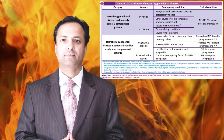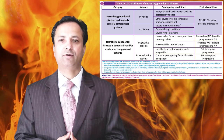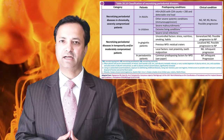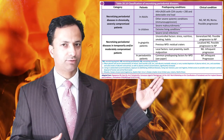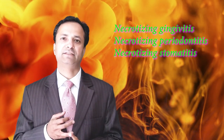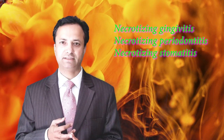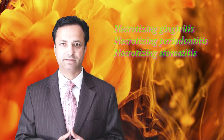According to the 2017 classification system, there are three forms of necrotizing periodontal diseases: first, necrotizing gingivitis; second, necrotizing periodontitis; and third, necrotizing stomatitis.